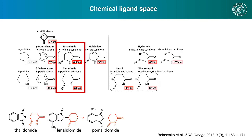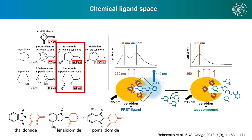With these constructs expressed, purified and characterized, we previously set out to probe the chemical ligand space of Cereblon. For affinity measurements, we had established a FRET assay that relies on a custom reporter. This reporter builds a FRET pair which is excited at the tryptophan wavelength of 295 nanometers and emits at 440. This FRET assay was tailored specifically to bacterial Cereblon.